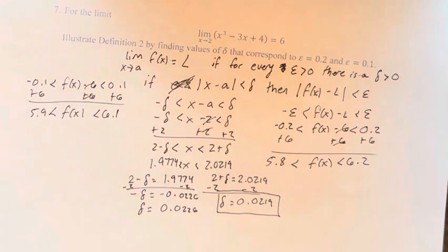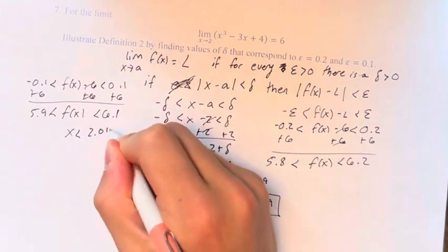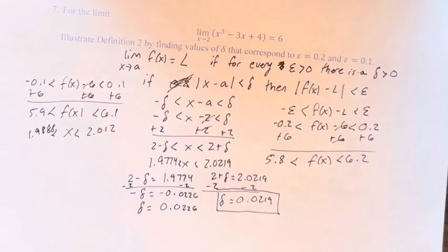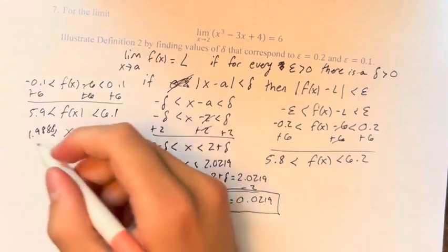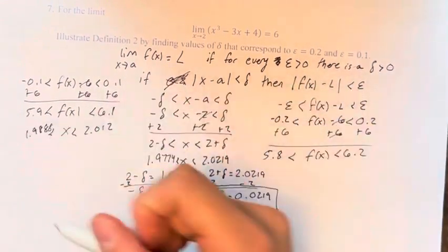And so the new values are 2.012 and 1.9888. So now we have those. So now we know that x is between 2.012 and 1.9888.